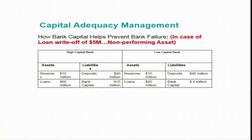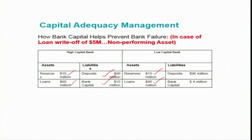Both banks have total assets of 100 million, with reserves of 10 million and loans of 90 million. On the liability side, the high capital bank has 90 million dollars of deposits and equity capital of 10 million — that is 10% of total assets. The low capital bank has 96 million in deposits but bank capital of only 4 million.